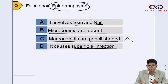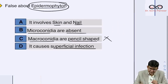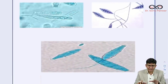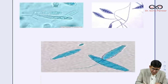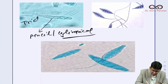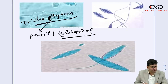Macroconidia is NOT pencil-shaped in Epidermophyton — that is the false statement, so the answer is C. Now, you can definitely correlate the various dermatophytes with their macroconidia shapes and they can ask you in the exam for sure. The pencil or cylindrical macroconidia shape belongs to Trichophyton.